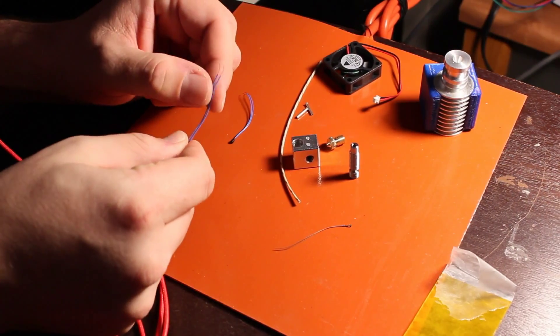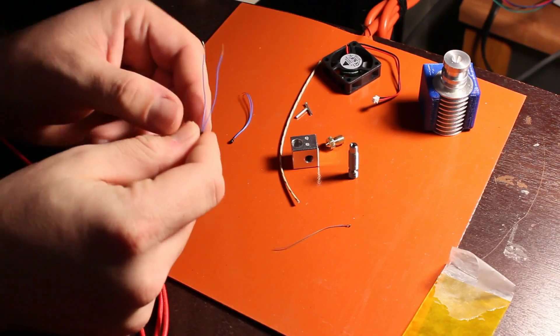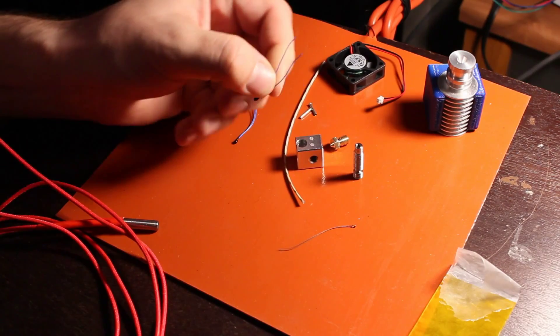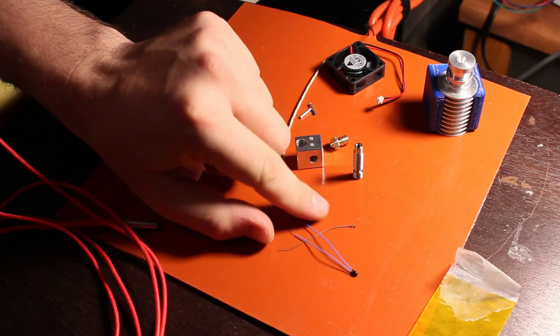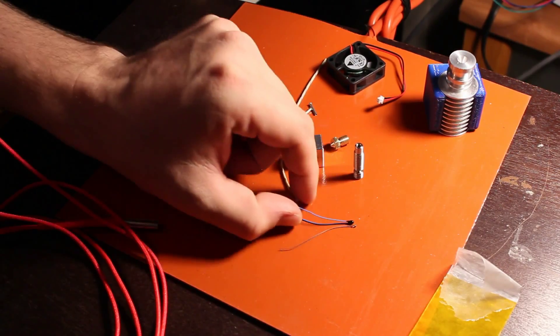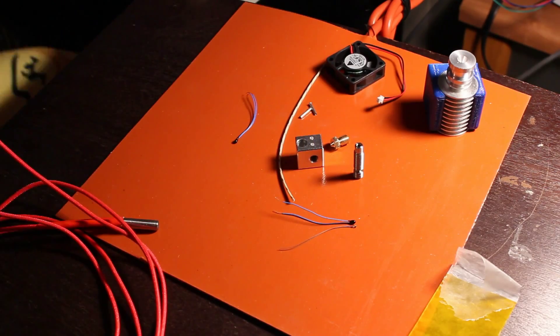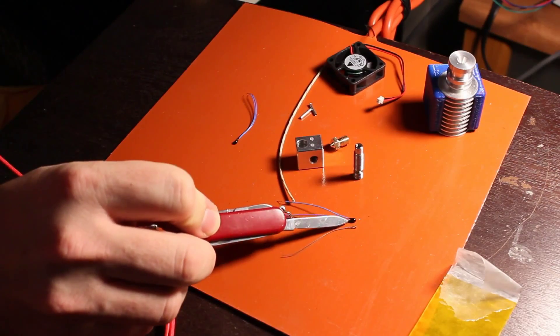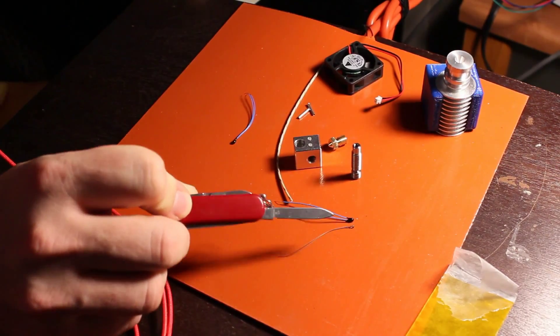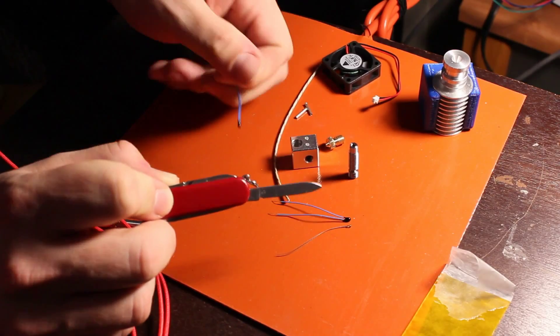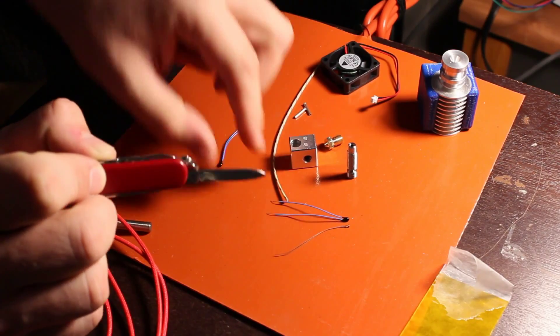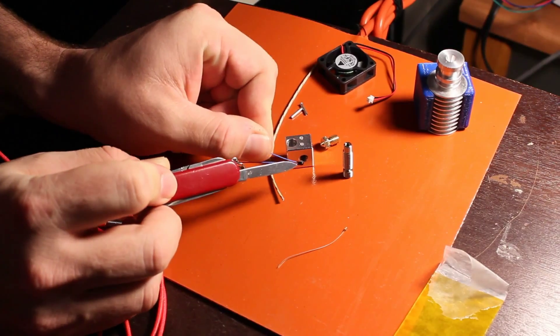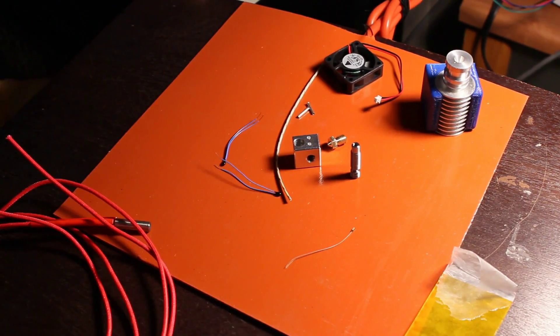So these are Epcos 100K thermistors. And they're a little bit larger. I'll put it next to this one that came with the E3D. A little bit larger. But most importantly, it's got this nice coating here. But most importantly, it has the sleeving, which I would guess is PTFE. It feels like it. Which is Teflon. It's really slippery and such.